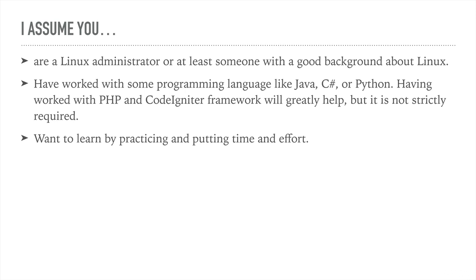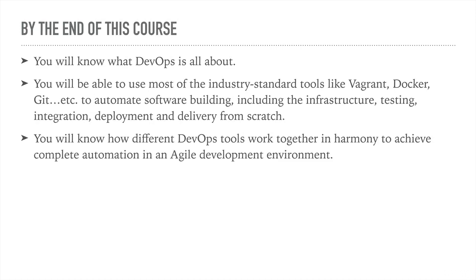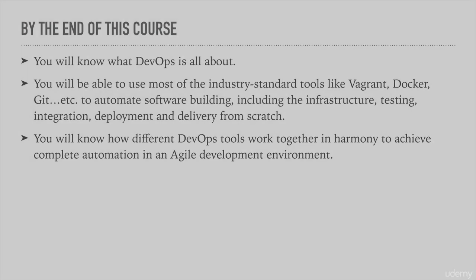I also assume that you want to learn by practicing and are ready to put time and effort into the process. By the end of this course, you will know what DevOps is all about. You will be able to use most of the industry's standard tools — like Vagrant, Docker, Git, and others — to automate software building, including infrastructure, testing, integration, deployment, and delivery from scratch. You will also know how different DevOps tools work together in harmony to achieve complete automation in an Agile development environment. I hope you will benefit and enjoy this course as much as I enjoyed teaching it. See you in section one.